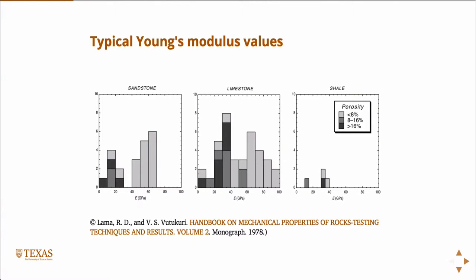So there's some typical Young's modulus for different rocks - sandstone, limestone, shale. The colors represent the porosity values, with the light colors being low porosity and the darker colors being high porosity.